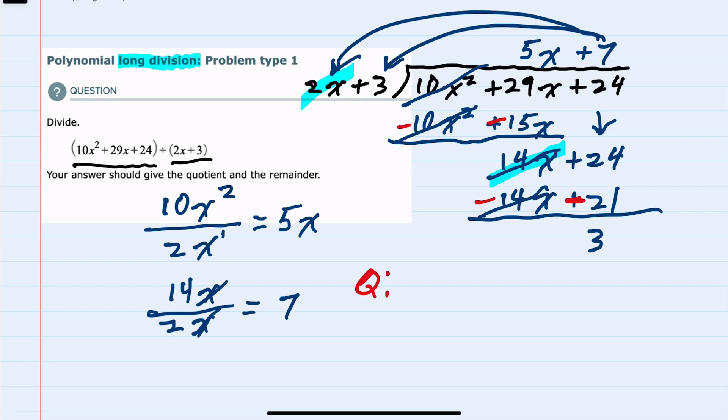So my quotient would be 5x plus 7, and my remainder is 3.